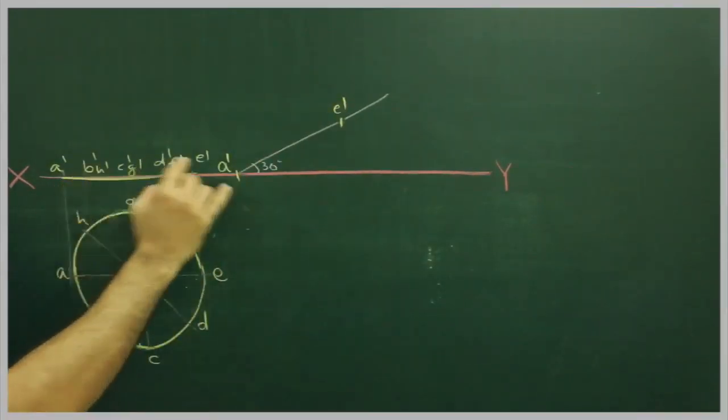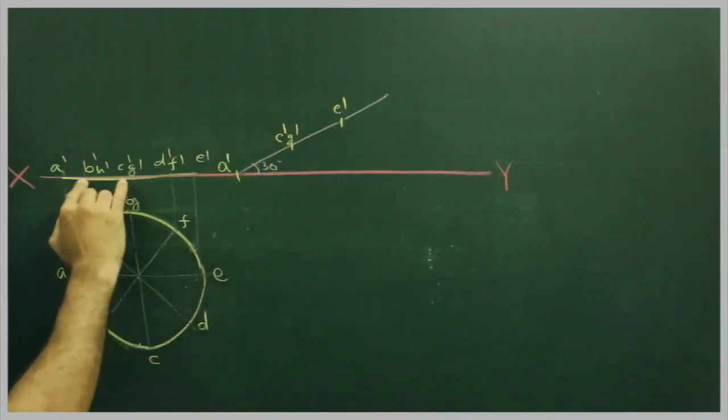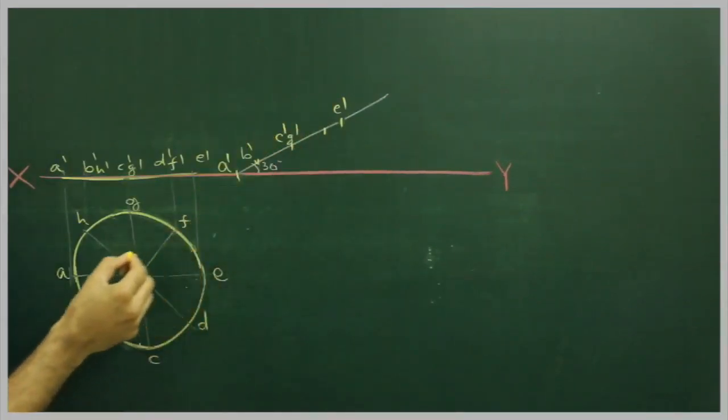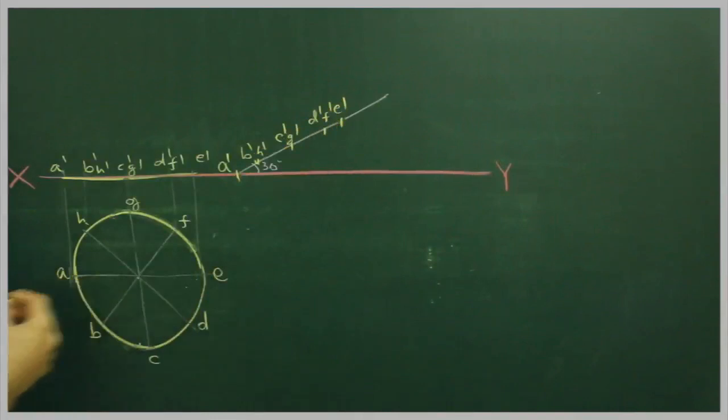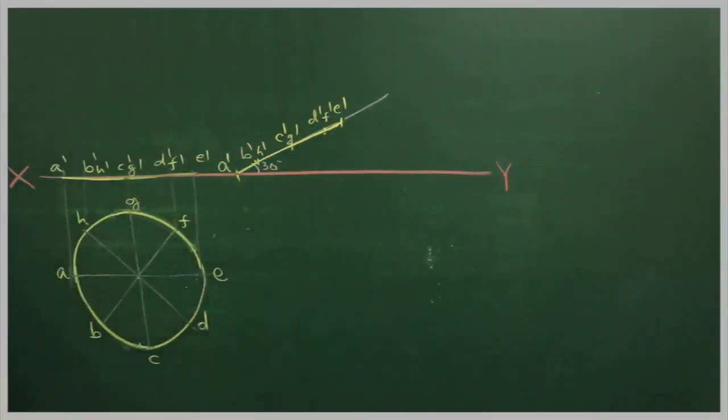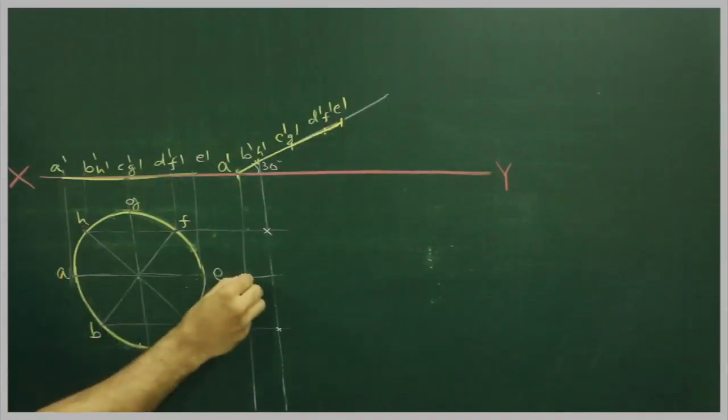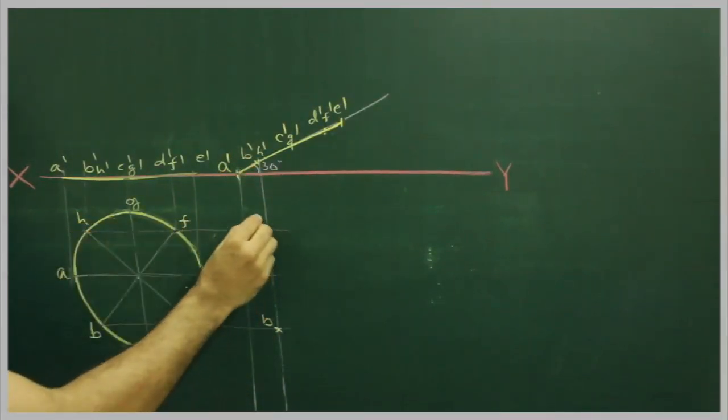Then take all these points and cut on this. So you get A dash from here and A from here. B dash and H dash from here. A dash from here, A from here, so you get point A. B dash from here and B from here, you get point B. H dash from here, H from here, you get H.